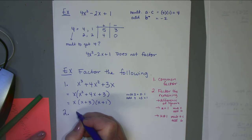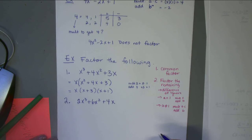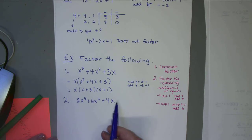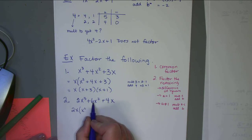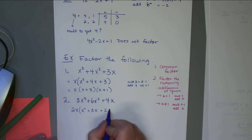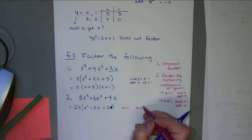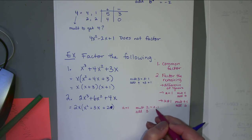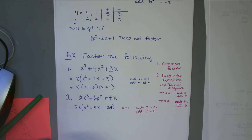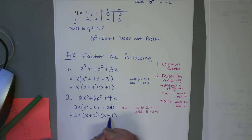Number 2: 2x³ + 6x² + 4x. Common factor is 2x, giving 2x(x² + 3x + 2). Now for a=1, we want numbers multiplying to 2 and adding to 3: 2 and 1 work. Check: 2×1=2 and 2+1=3. So the factored form is 2x(x+2)(x+1).